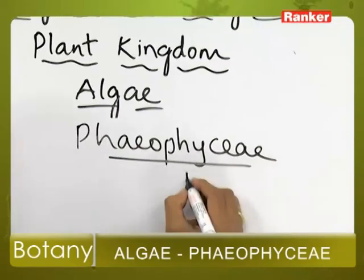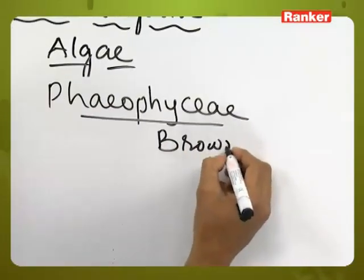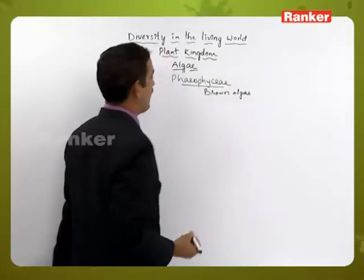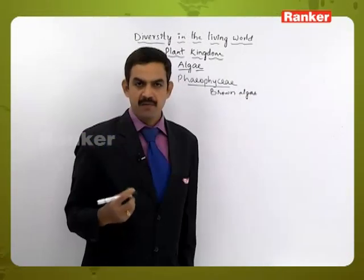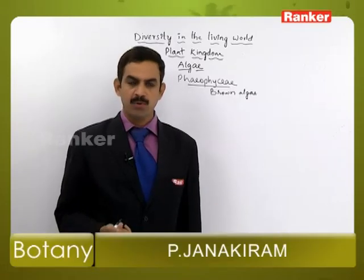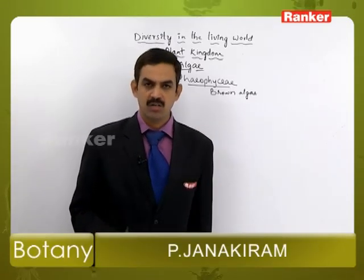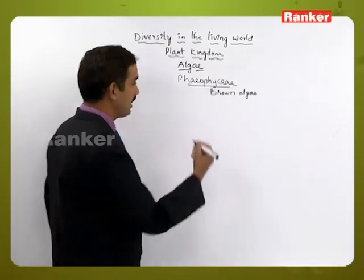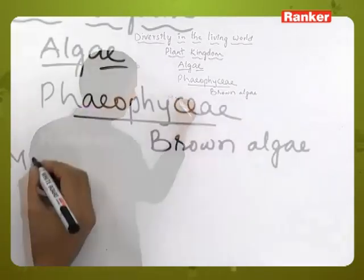Phaeophyceae members are called brown algae. These members show different shades of brown color based on the particular pigment called fucoxanthin, which is present in them. Most of them are marine forms.